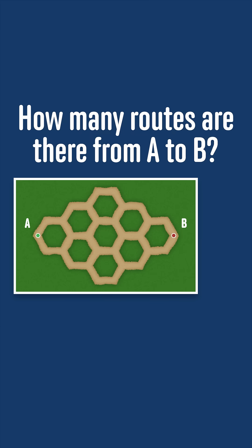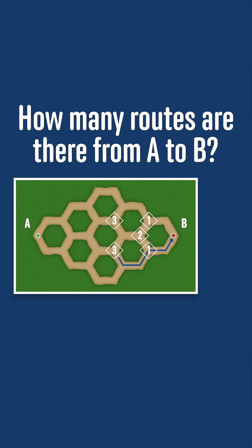We're going to work back from points close to B and gradually build up the options for the routes. From these points, there is only one route, and so from this point there would be two possible routes. If we now look at this point, we can go up and have one route, or we can go down and have two routes from there, so there would be three routes from that point, and similarly there would be three routes from this point here as well.